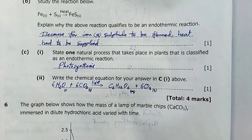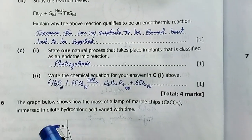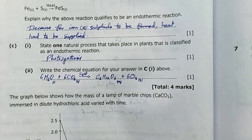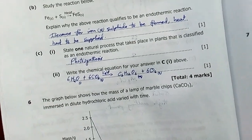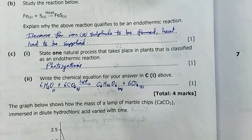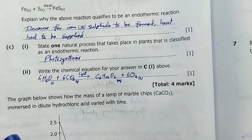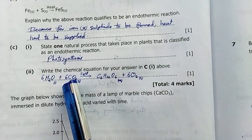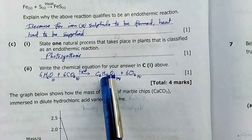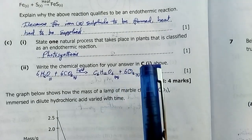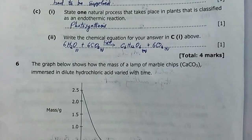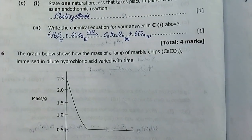State one natural process that takes place in plants that is classified as endothermic. Photosynthesis - it absorbs energy in form of light and also warmth. Write the chemical equation for the reaction. My equation is: water plus carbon dioxide in the presence of light gives glucose or simple sugar plus oxygen. That's the reaction of photosynthesis. This light here is actually energy.